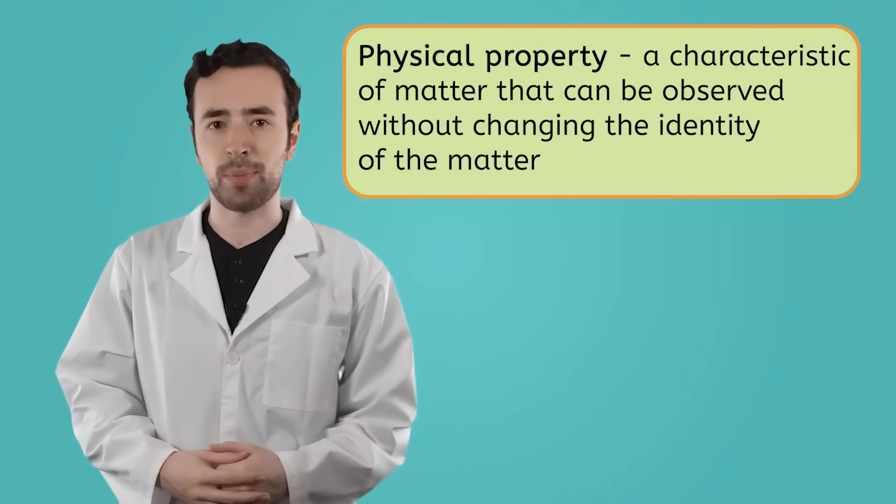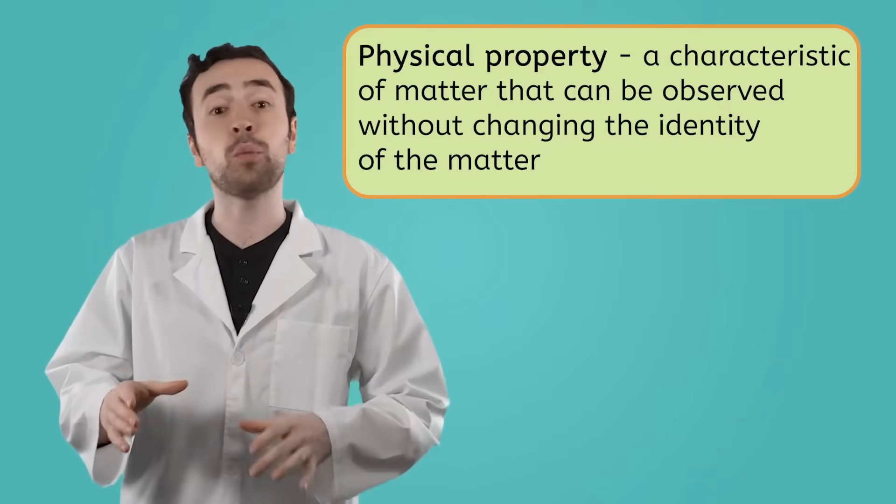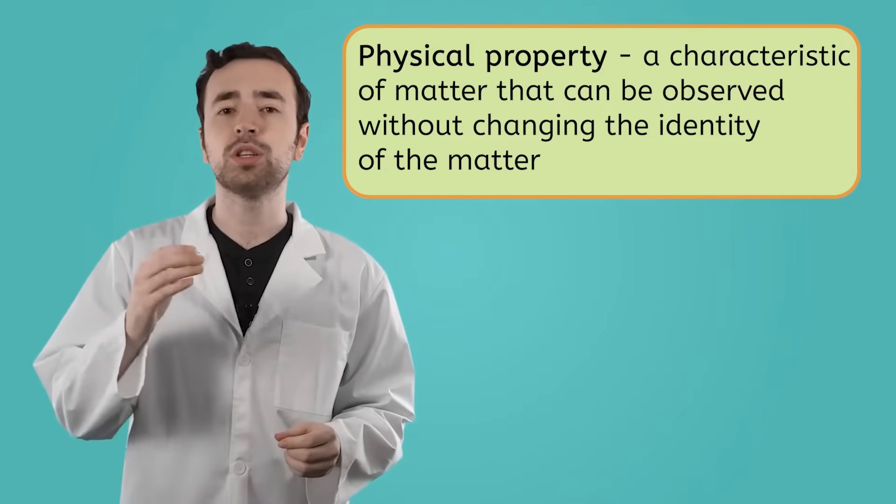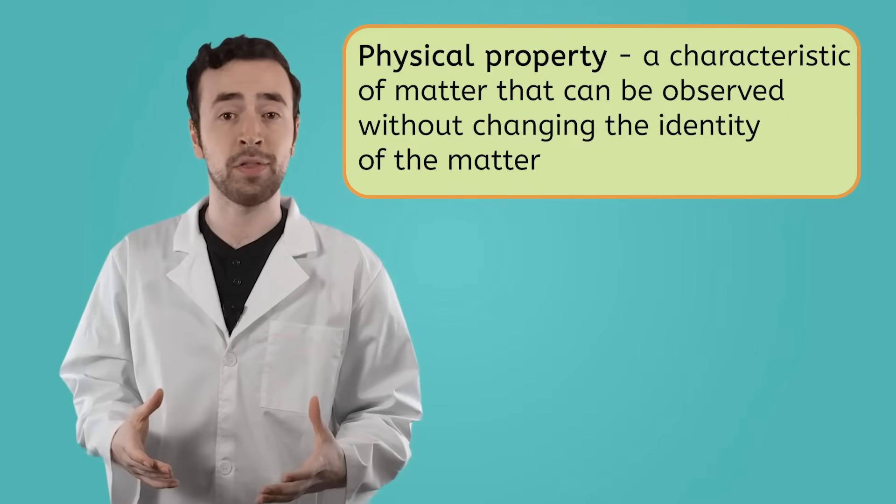You might have just answered that question with the color of your hair, how tall you are, or maybe your shoe size. These are all great examples of what we call physical properties. A physical property of matter is a property that we can observe without changing the identity of the matter. So I can observe this chair, see that it's blue, and it's still the same chair after the fact.